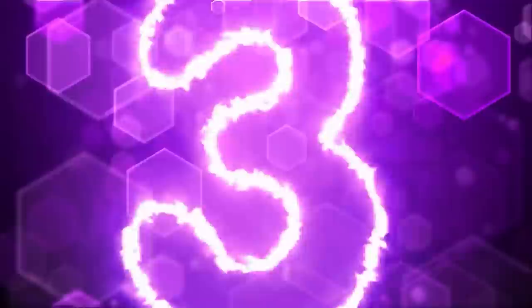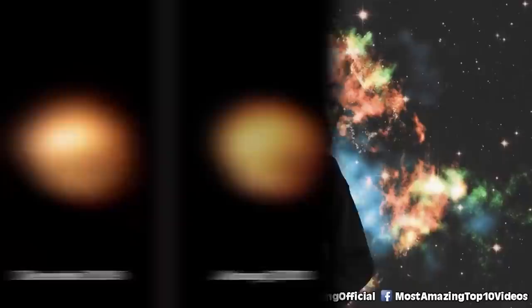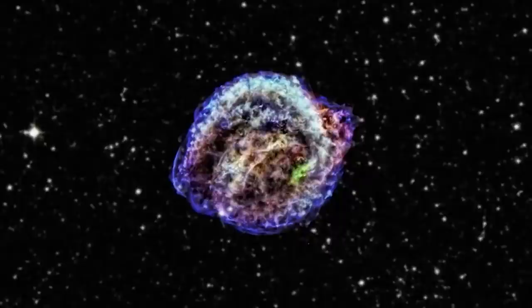Number three, supernova. For this next one we'll be looking at Betelgeuse. And no, I don't mean Michael Keaton, although he's pretty scary. I'm talking about the red giant located in the Orion constellation. It began to dim back in 2019, which is not a great sign. Its decay would be quite noticeable here on Earth. For example, the last time a star went supernova and we were able to observe it, the last time was 1604, and that was the Kepler star.